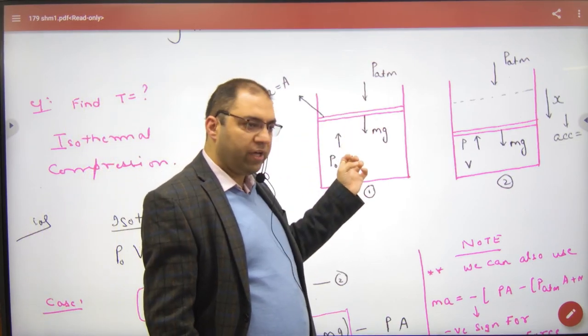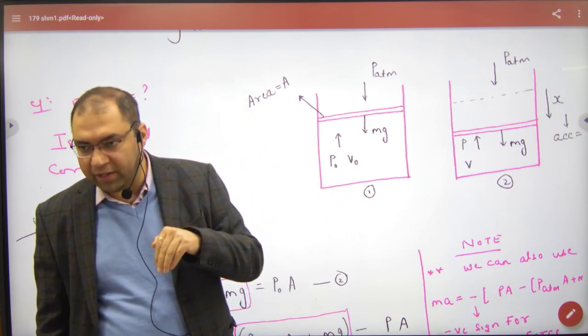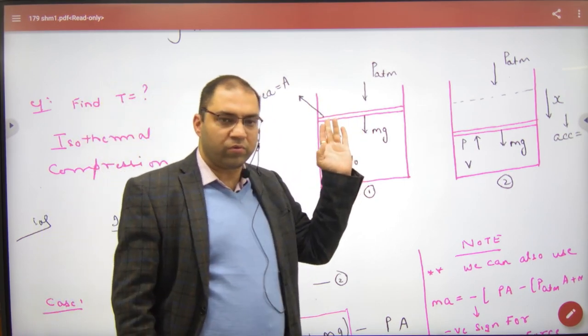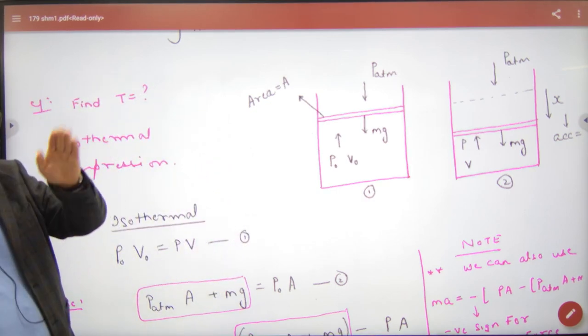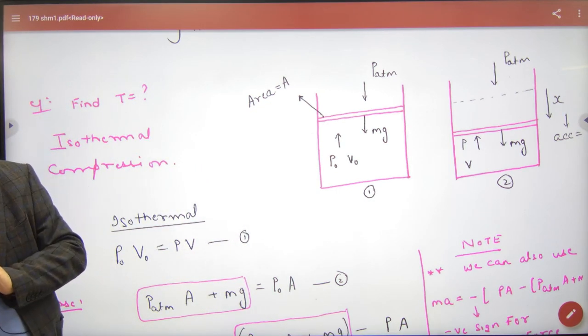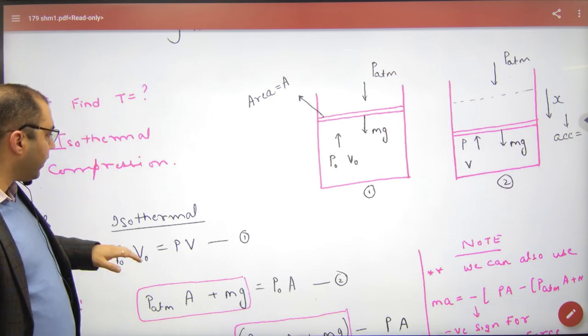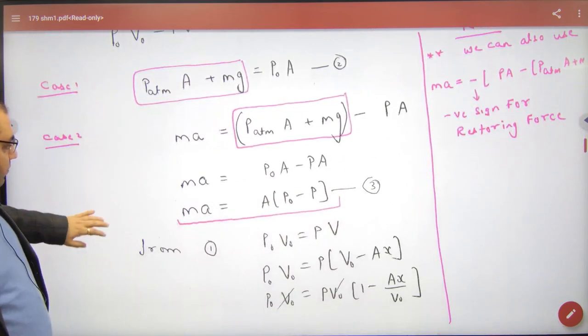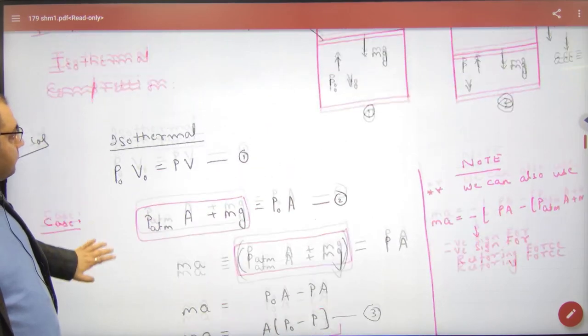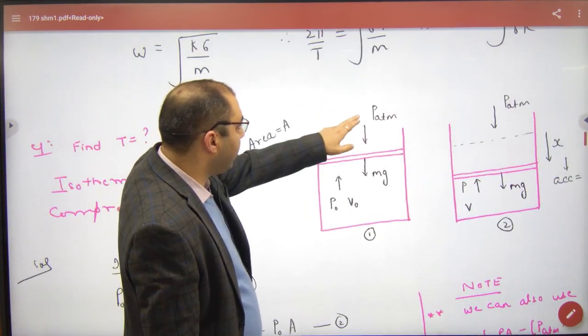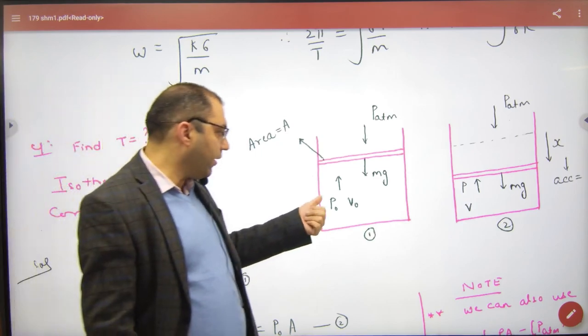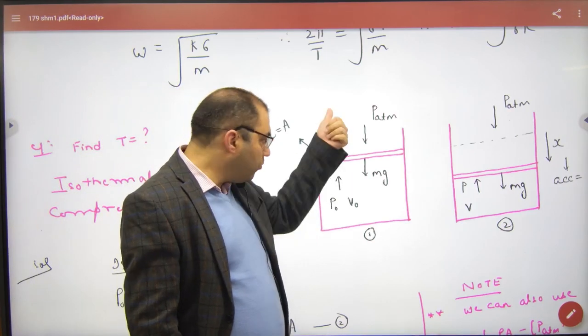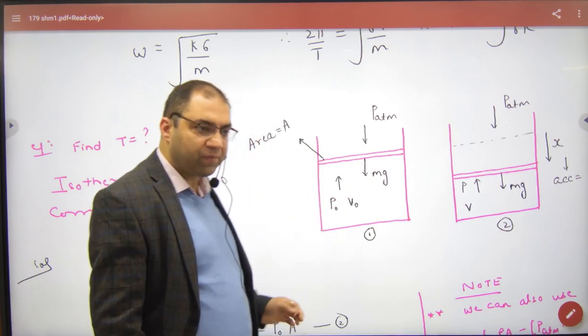It is in equilibrium. Its weight is Mg. It is atmospheric. The gas from below has pressure P-naught. The forces must be balanced. The force from above is P-atmospheric into A. The force from below is P-naught into A and the force from above is Mg.